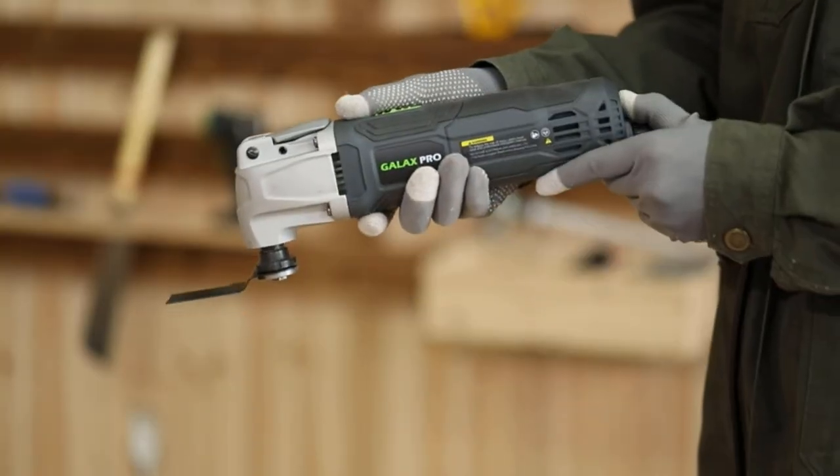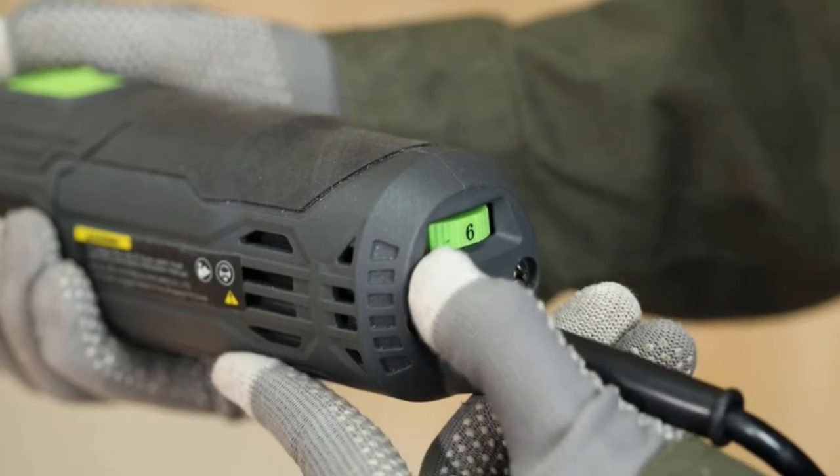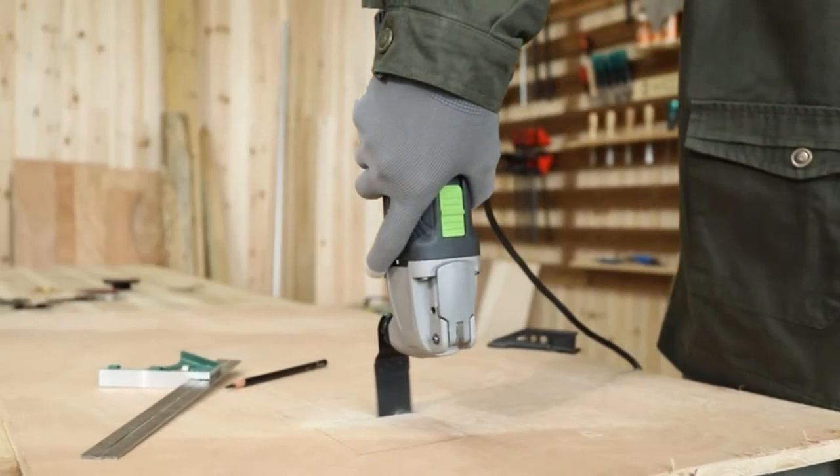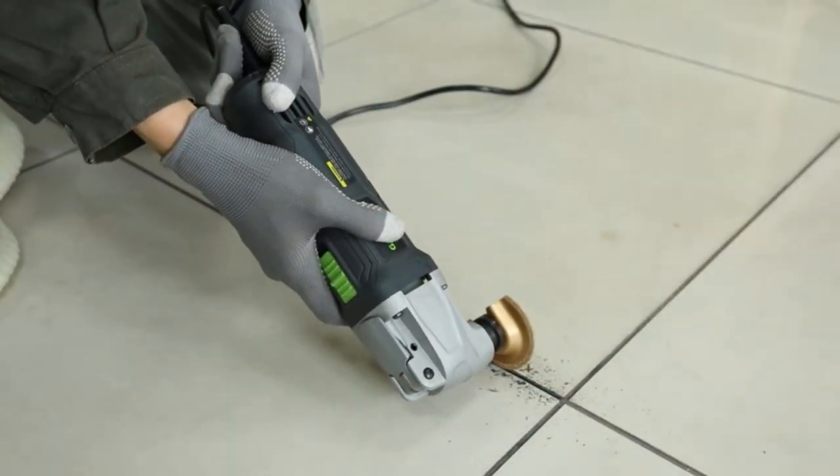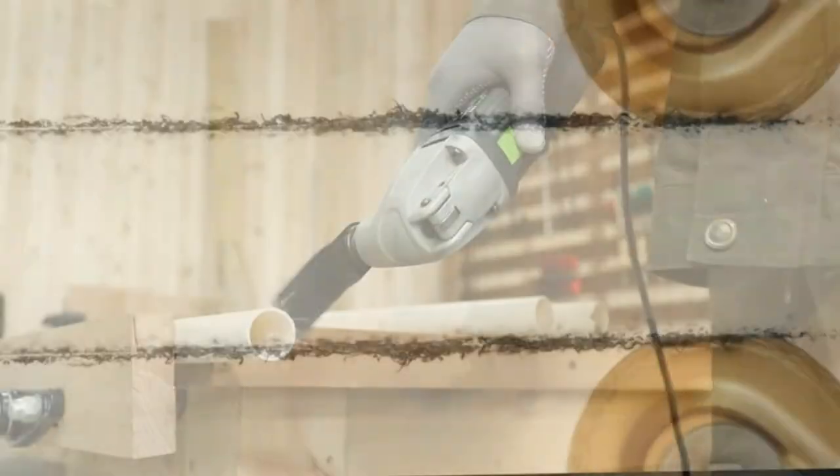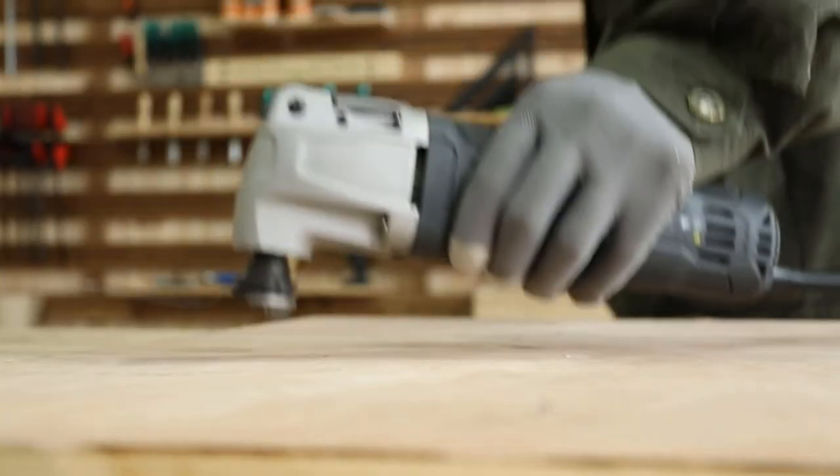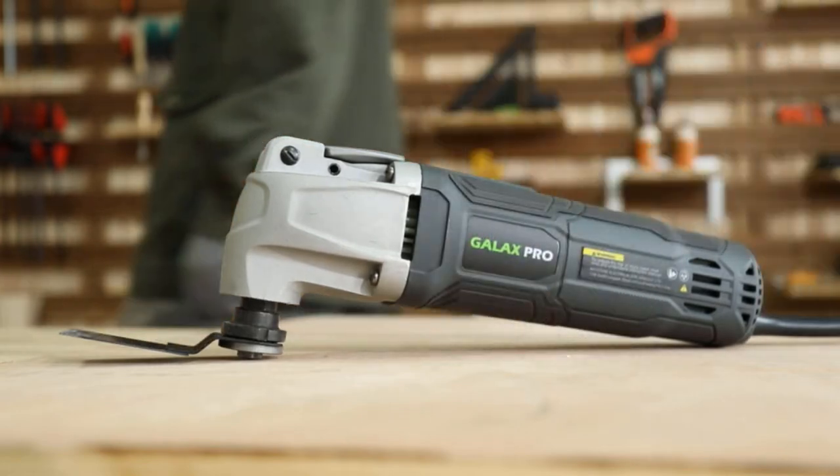Using this tool, you can do various works such as cutting, trimming, sawing, grinding, and sanding. The quick release lever allows for tool-free blade replacement which will save your time. Along with the tool, you will also get 8 pieces of accessories and a carry bag.